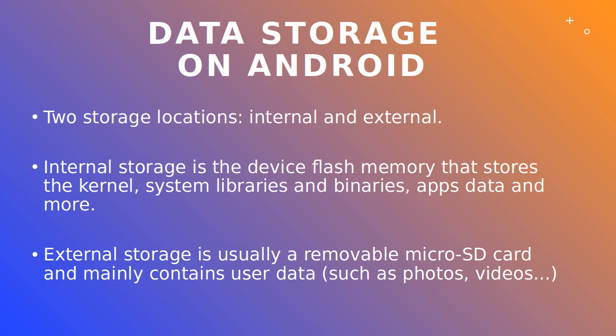Android, like other mobile operating systems, stores data in two locations: the internal flash memory and the external removable microSD card. The internal flash memory is the main storage location where the kernel, system files and applications are stored. The external storage is mainly used to store user data like images and videos, but can also contain user applications.